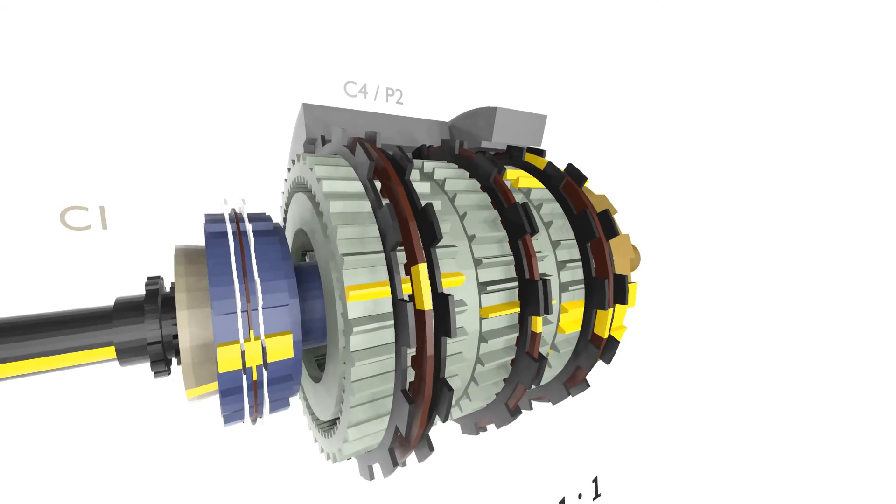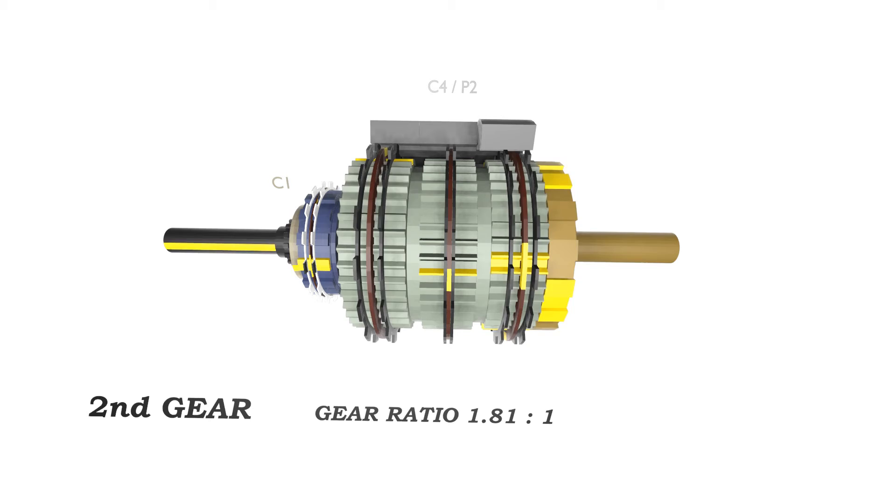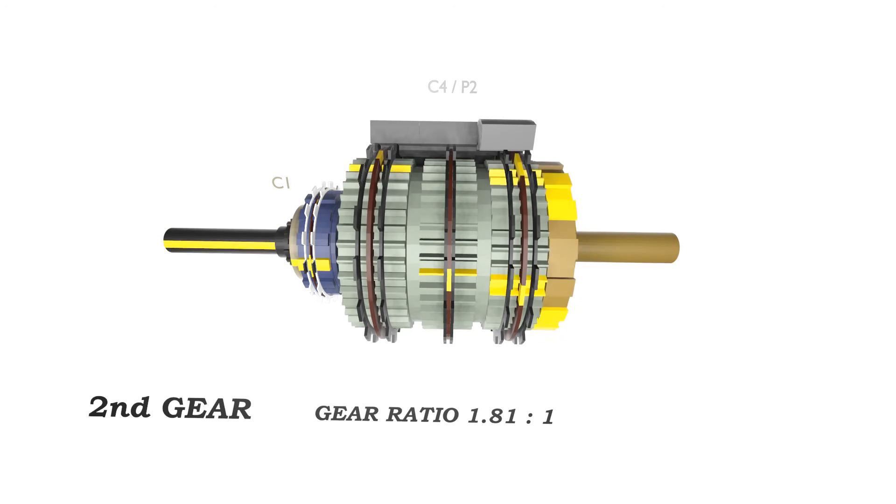The gear ratio for second gear is 1.81 to 1. The input shaft will turn 1.81 times to deliver one turn to the output shaft.